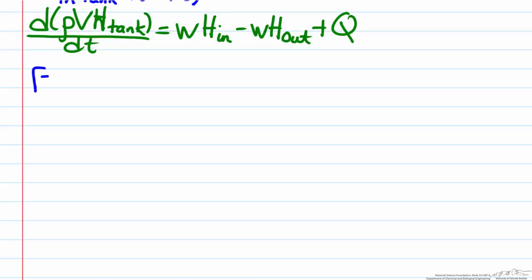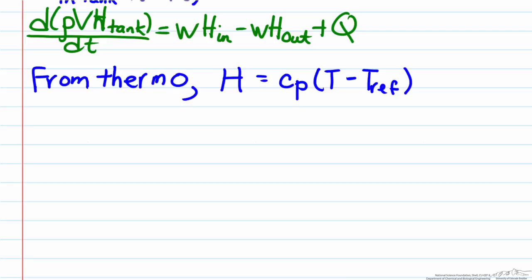From thermodynamics, we can express what the value of the enthalpy is. We can say that for systems with constant heat capacity, H can be expressed as the heat capacity multiplied by the temperature of which the fluid is at minus some reference temperature. And what we'll now do is substitute this definition of enthalpy into our energy balance where enthalpy is located, which is at the tank, the inlet stream, and the outlet stream.